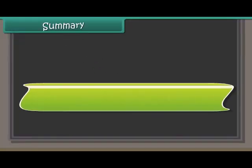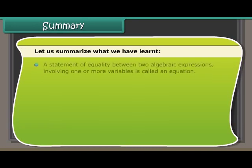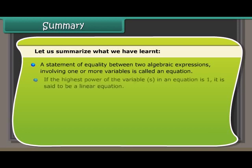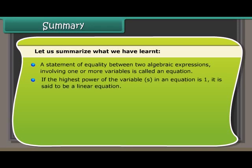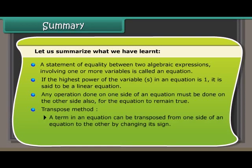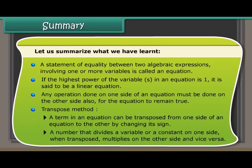Summary: A statement of equality between two algebraic expressions involving one or more variables is called an equation. If the highest power of the variables is 1, it is a linear equation. Any operation done on one side must be done on the other side. Transpose method: a term can be transposed by changing its sign; a number that divides on one side multiplies on the other side and vice versa.